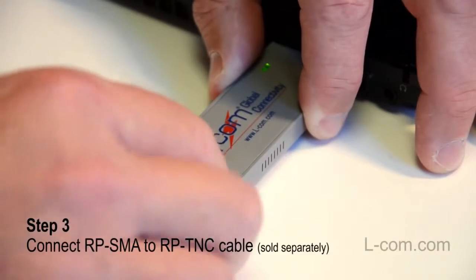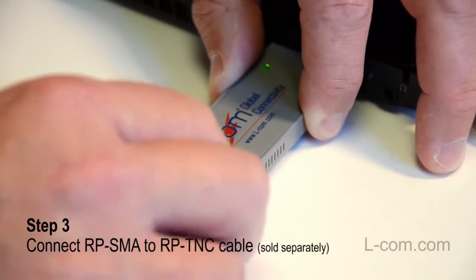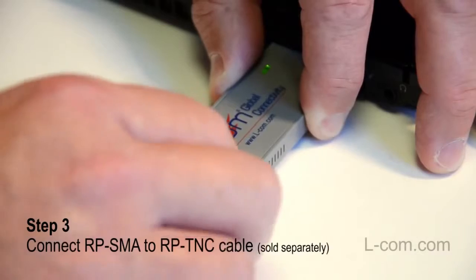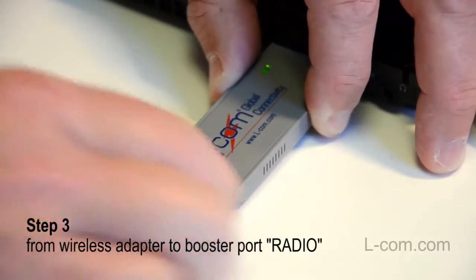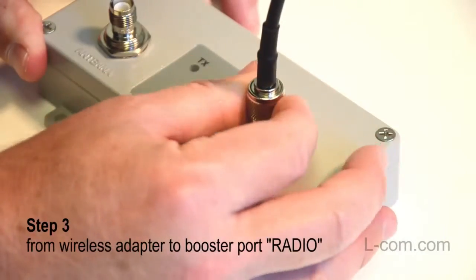Then connect a reverse polarity SMA to reverse polarity TNC cable from the USB wireless adapter to the Wi-Fi booster port marked radio.